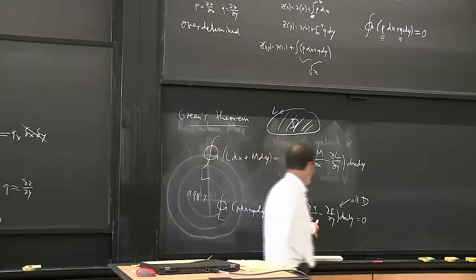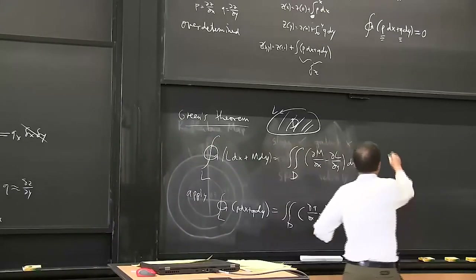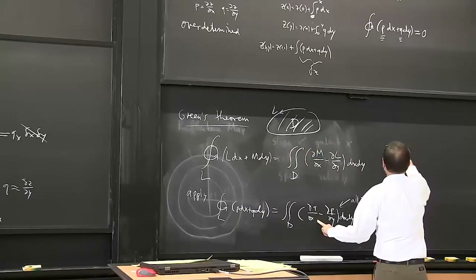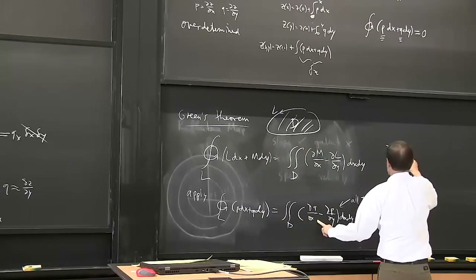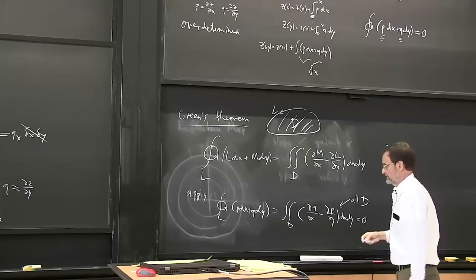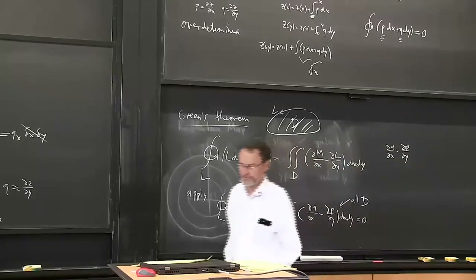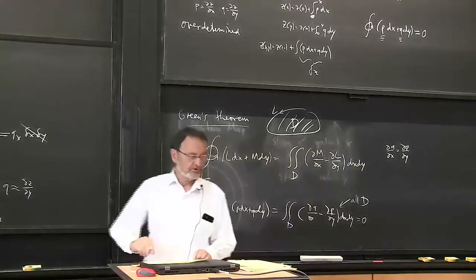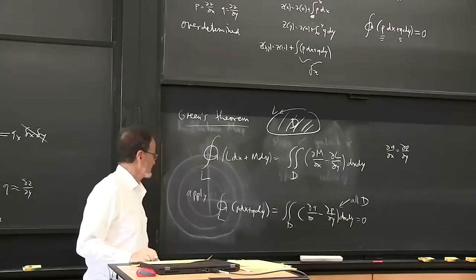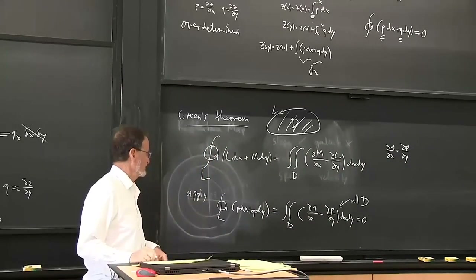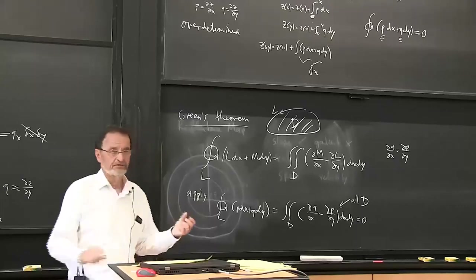That can only be true if dQ/dx equals dP/dy. Because suppose that integrand was nonzero at some point - all I need to do is construct a loop that includes that point, and I'd have a contradiction.